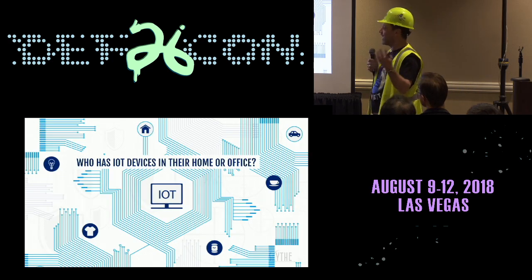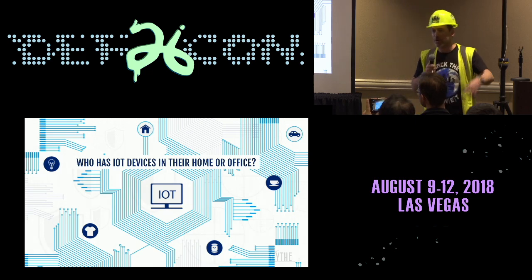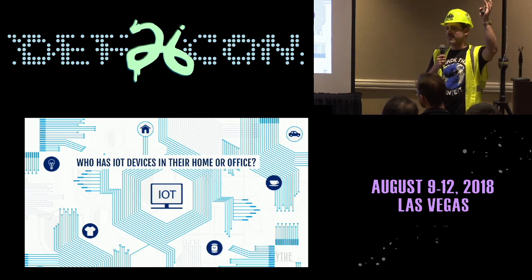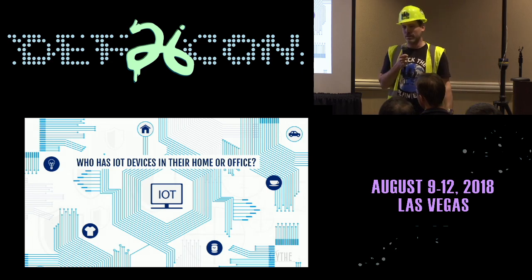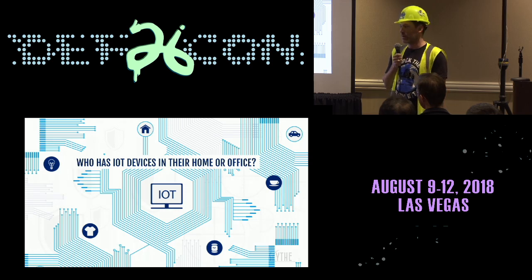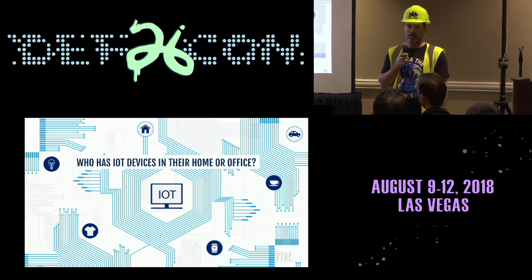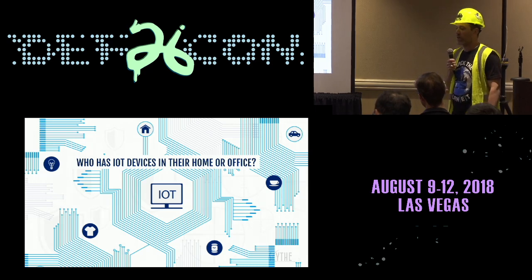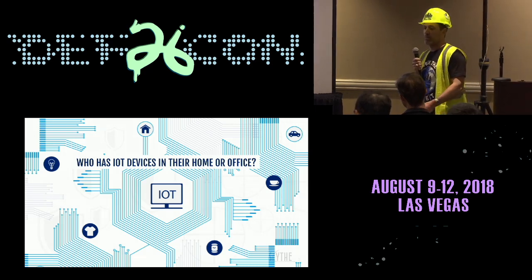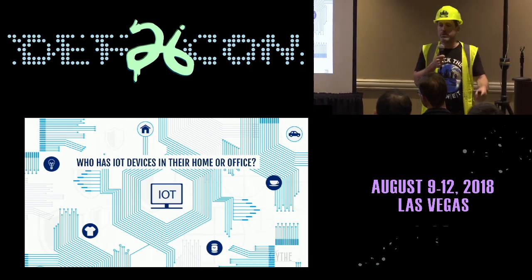Who has IoT devices? This is where we all raise our hands. The thing about the Internet of Things is they're ubiquitous — they are everywhere. We are not far away from computers being embedded in our clothes. Computerized underwear? That's coming. That's a reflection of the fact that computing has finally reached the point where it is so cheap that we can mass produce it and push computation anywhere.